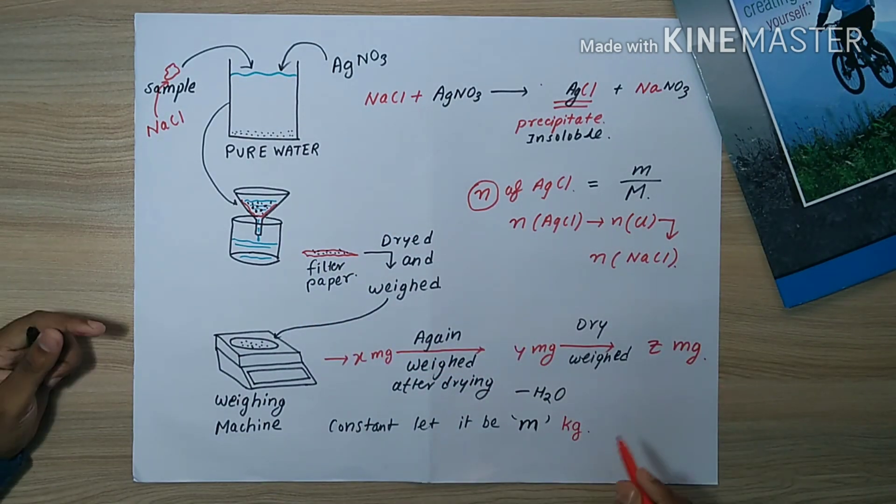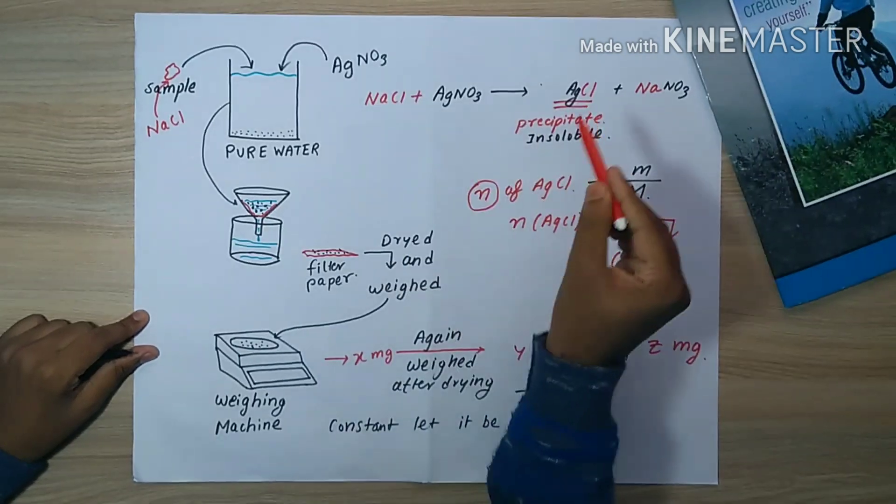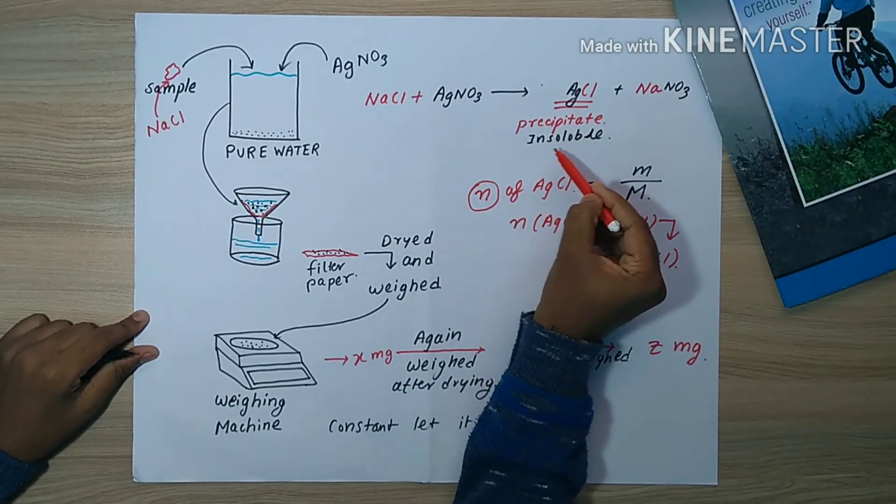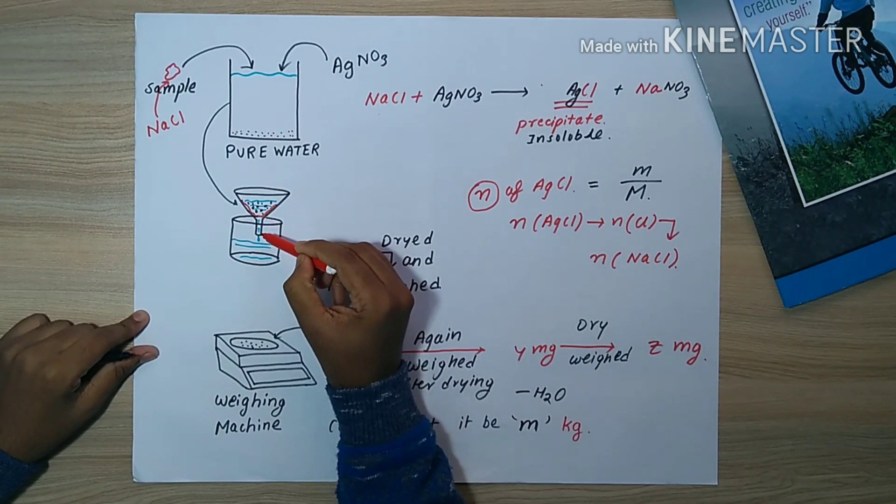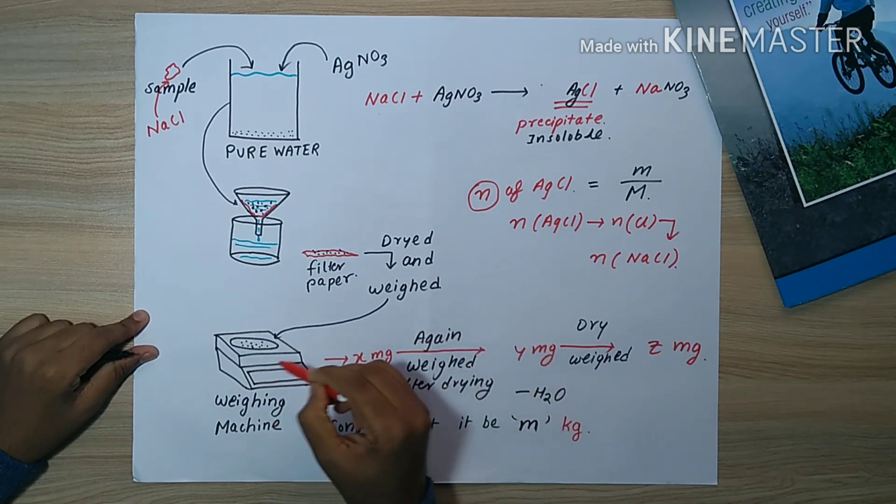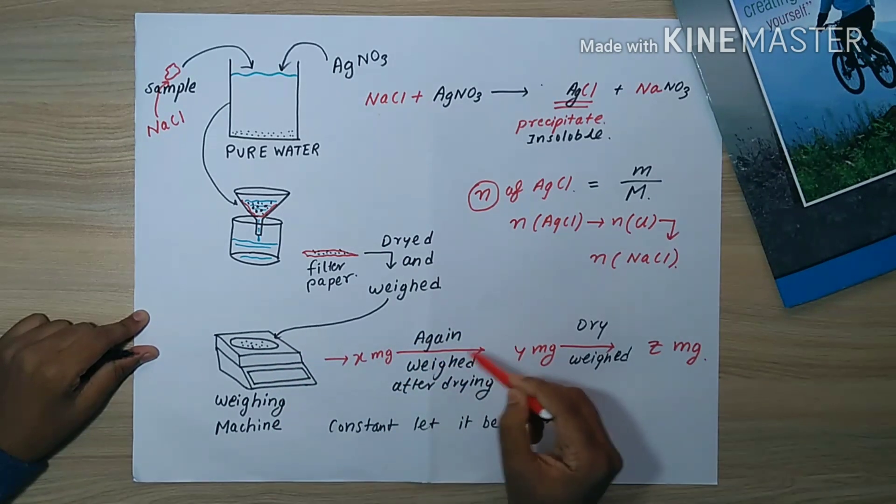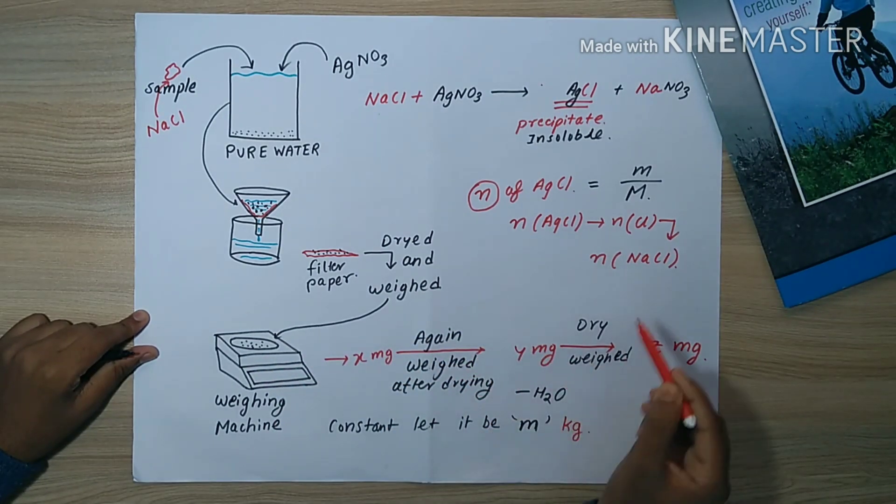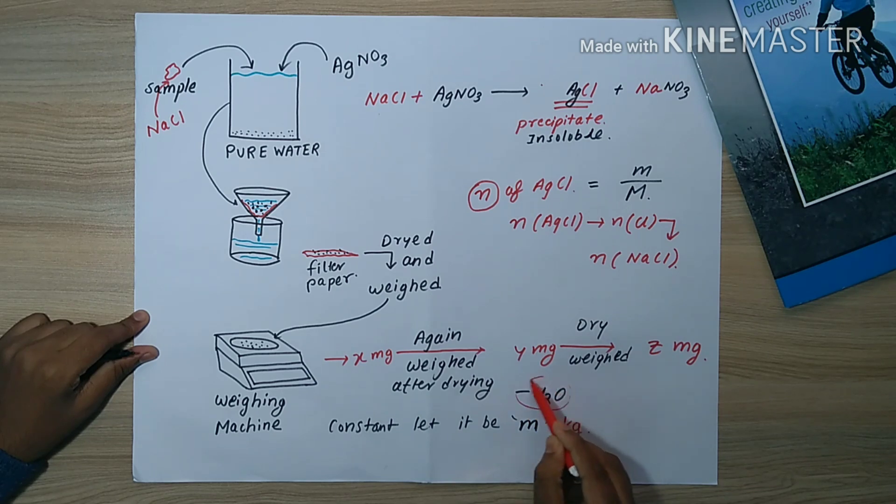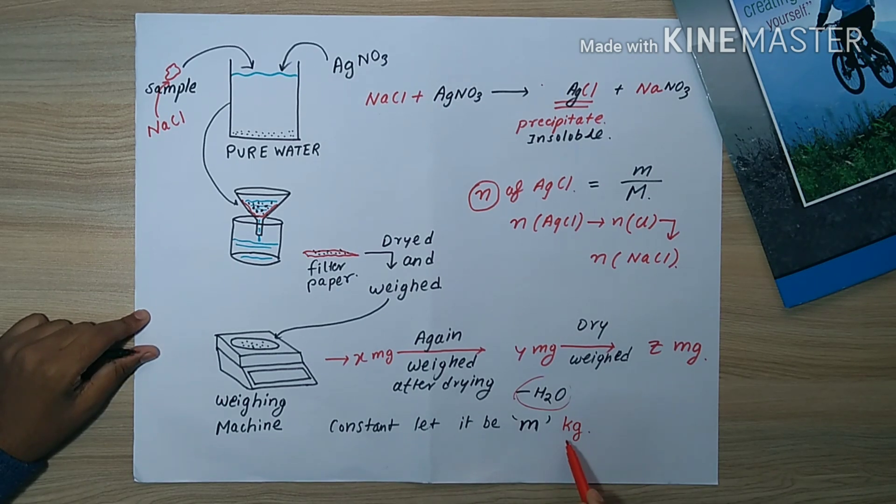If we start from the beginning, we reacted NaCl with AgNO3 and formed precipitate. This was filtered and the filtrate is dried and weighed on a weighing machine. It gives x milligrams, then it reduced to y milligrams, then to z milligrams. This reduction of weight occurred due to the loss of H2O until it attained a constant weight.